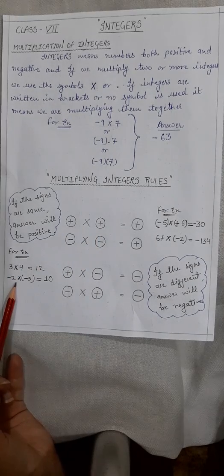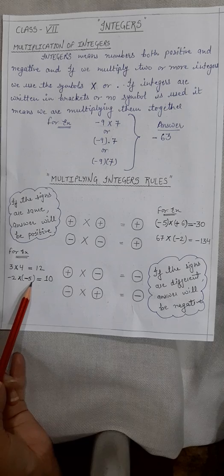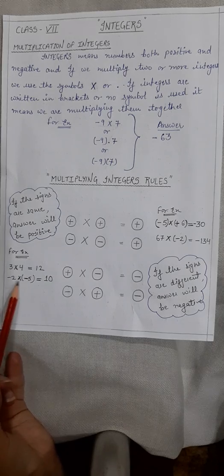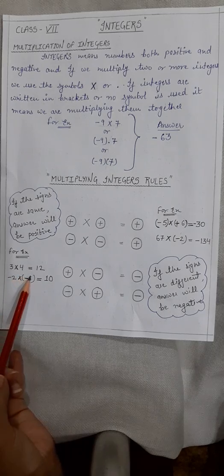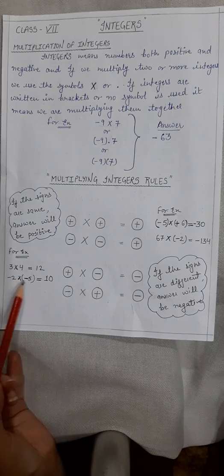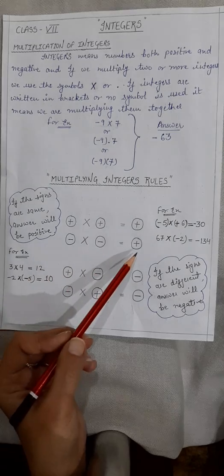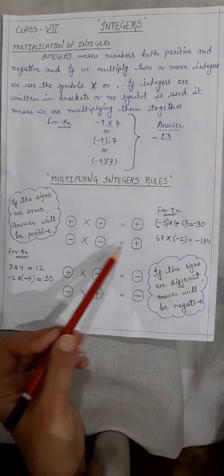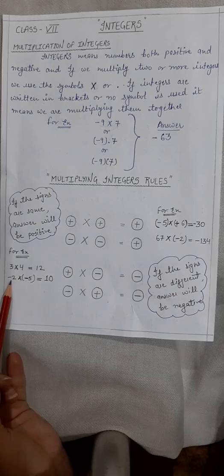Second example: minus 2 multiplied with minus 5. Here you can see again same signs are coming. So first multiply the numbers only — 2 into 5 is 10 — and then the sign will be positive because both integers have the same sign.